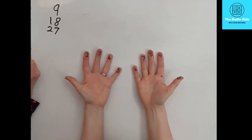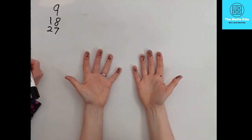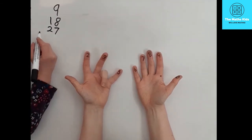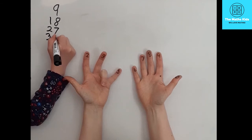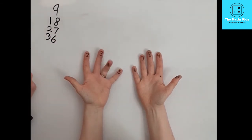You can keep on going like this. So 4x9 is 36. 5x9 is 45.